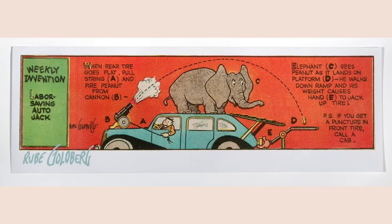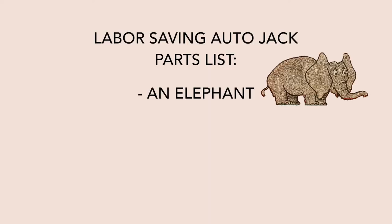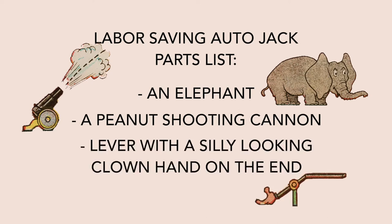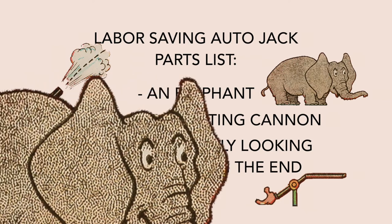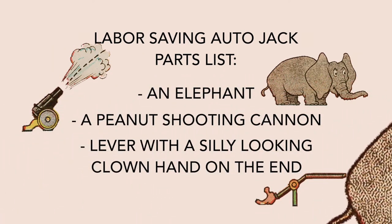Okay, well, let's evaluate another machine illustration or schematic cartoon that Rube created. This one's called the labor saving autojack. That sounds useful. Upon inspection though, I'm noticing that in order for me to build this machine, I will first need to collect an elephant, a peanut shooting cannon, and a lever with a silly looking clown hand on the end. Do you have a spare elephant I can borrow to build this machine? How about a bag of peanuts? What a circus this is turning out to be.